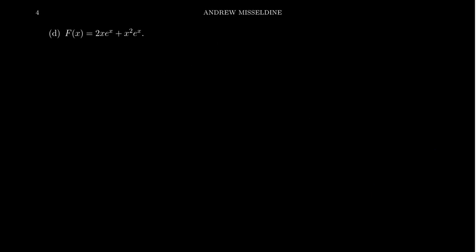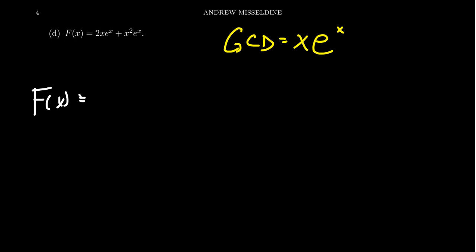Let's throw some exponentials into play. f(x) = 2x·e^x + x²·e^x. What's our GCD? Looking at coefficients 2 and 1 — nothing to take out. For x and x², take the smallest power: x to the first. Both terms are also divisible by e^x. So our GCD is x·e^x. Factoring: from the first term, taking away x and e^x leaves 2; from the second term, taking away x leaves x, and taking away e^x leaves just x. So f(x) = x·e^x·(2 + x).